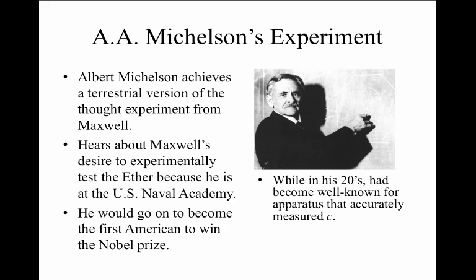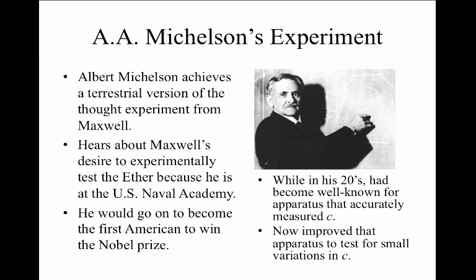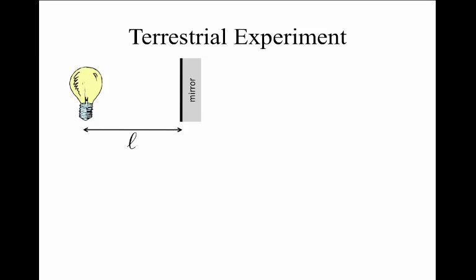In his 20s, he had become well known for a measurement apparatus to accurately measure the speed of light, C, and he improved that apparatus in order to accomplish the test for the ether. The terrestrial experiment, again, had a light source and would reflect it off of a mirror.